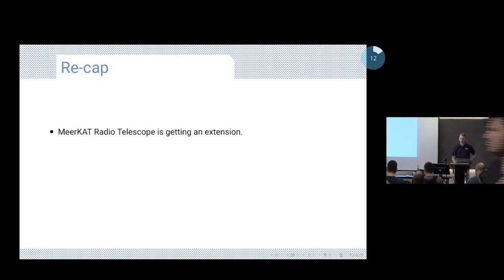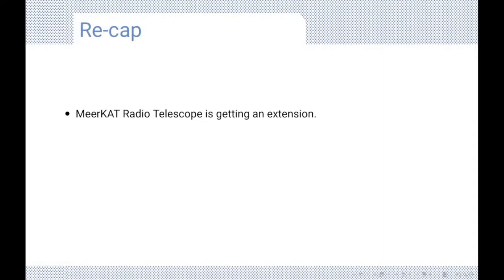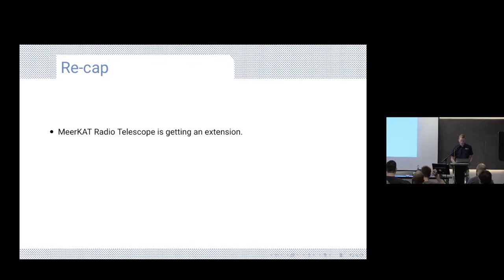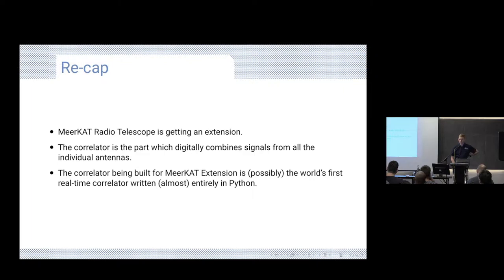A little bit of background. I spoke about a lot of MeerKAT-related stuff earlier today, but for the benefit of those who weren't in my talk: MeerKAT is a radio telescope. It's currently doing great science and it's getting an extension — we're going to get 15 or 20 more antennas to do better science. The correlator is the part which combines signals from all the individual antennas, and the one we're building for the MeerKAT extension is possibly the world's first real-time correlator mostly written entirely in Python — there's a little bit of CUDA doing the hard work.